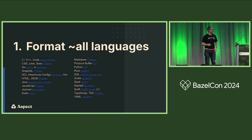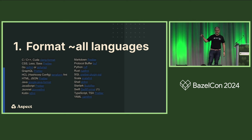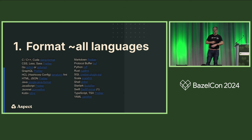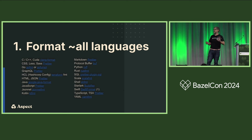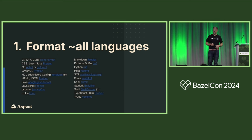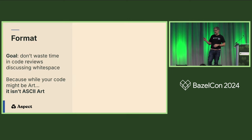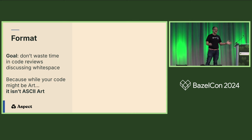So the first talk is about formatting. These are the languages that Rules Lint supports right now and the tools used for those languages — quite a few of them. The goal here is to do all languages at once; I don't want to have any language-specific discussions because I think this is a problem that can be easily abstracted across them all. What is the goal of formatting? Why do engineers care? Well, the main goal is: let's not talk about whitespace in code reviews, please, ever again.